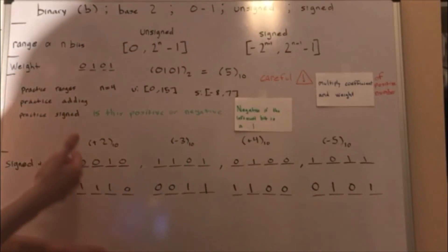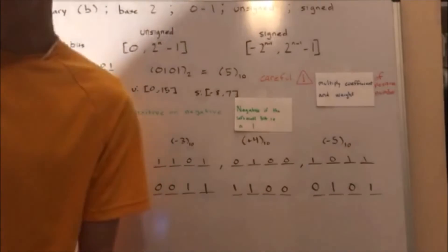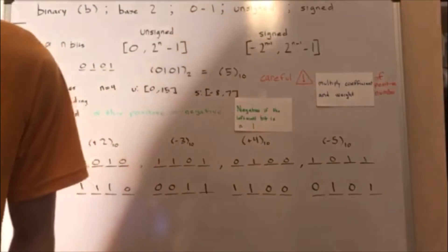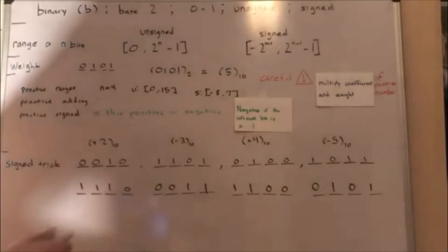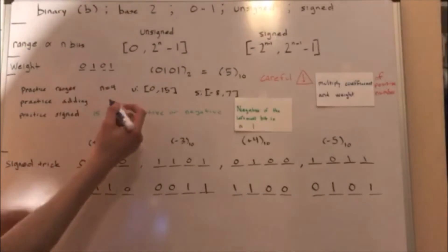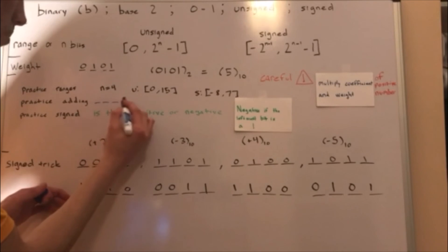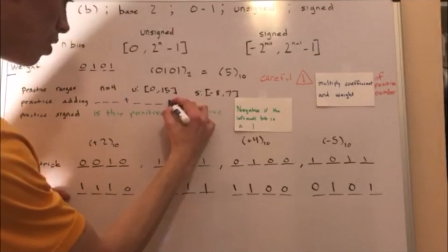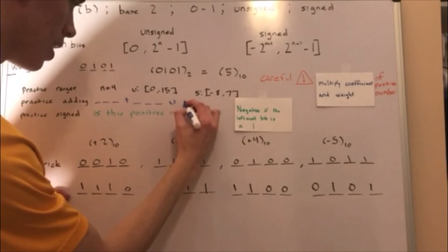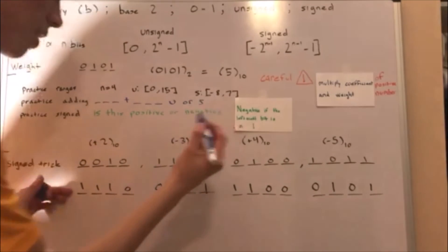You've learned a lot today. The final step is practice adding. Pick an n-bit number, then add another n-bit number — you can do either unsigned or signed.